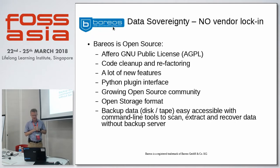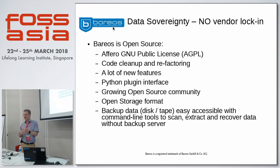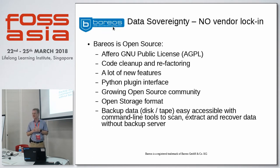No vendor lock-in, 100% open source. Making a fork on GitHub is easy — you just press fork — but that doesn't help anybody. What we did was look at what features were missing and what could be done better in terms of code organization. We did a lot of cleanup and refactoring, invented a Python plugin interface to speed up development of agents that can back up special environments like VMware, databases, and other applications. We have a growing open source community, an open storage format, and special command-line tools to access tapes — so even if you've lost your Barrios server but still have your tapes, these simple tools ease the first steps of disaster recovery.